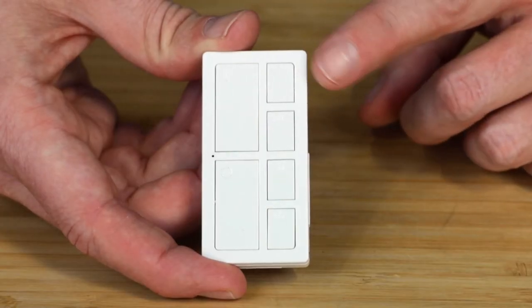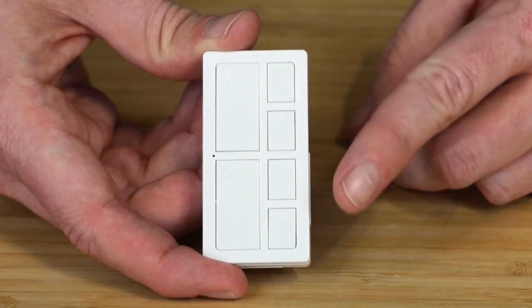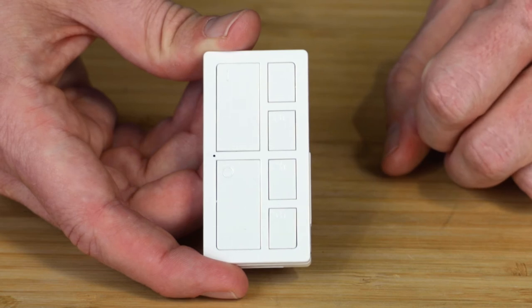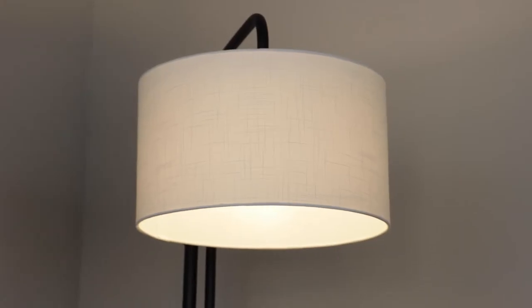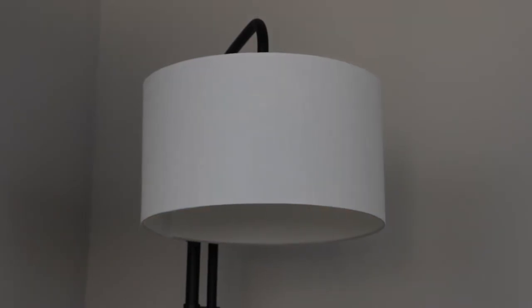Four countdown options allow your device to turn on for between 30 minutes and 4 hours. At the end of the time indicated on the button, the light automatically turns off.